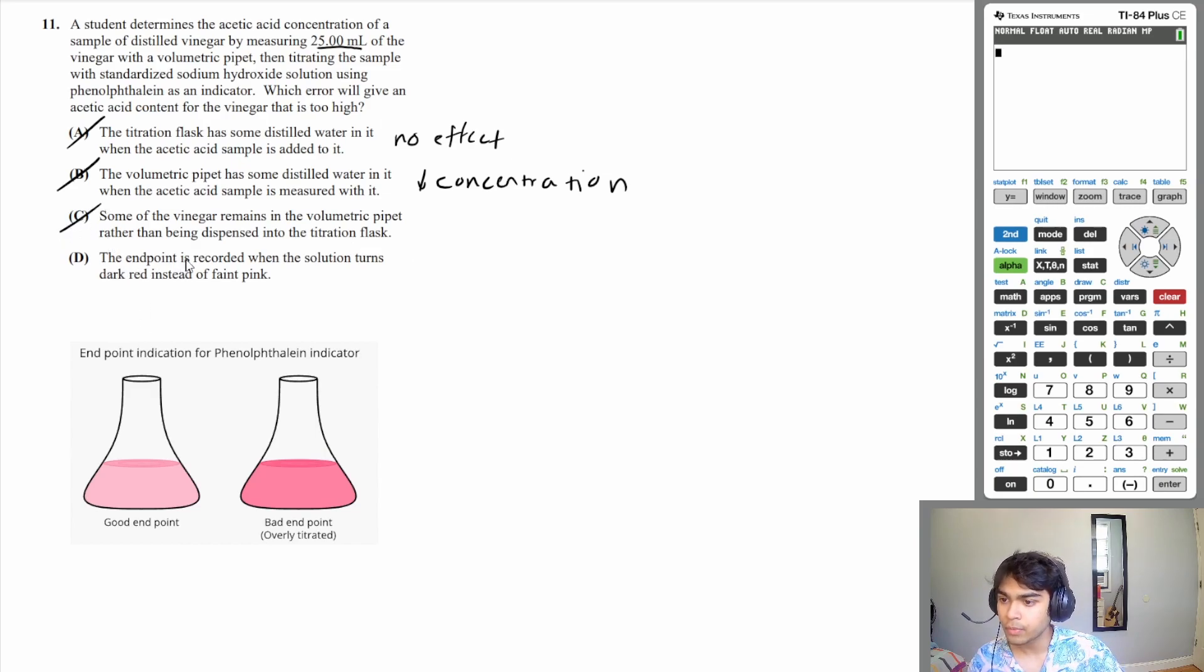D, the endpoint is recorded when the solution turns dark pink instead of faint pink. Now, although phenolphthalein doesn't really turn dark red, I think this is red.